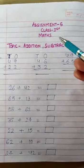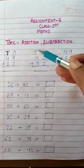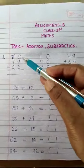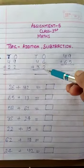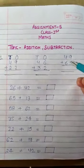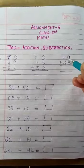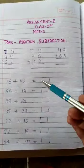Assignment 5, Class 1, Maths. Topic is addition, subtraction. One stands 49 plus 22. One stands 46 plus 32. One stands 49 plus 65.